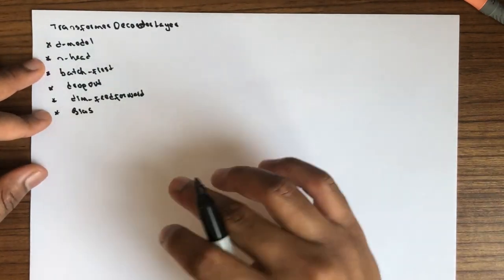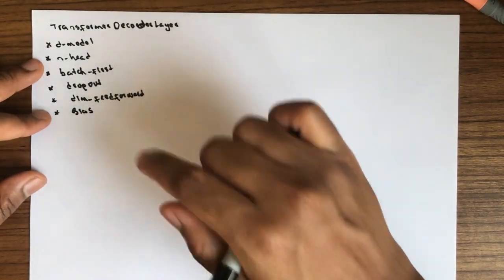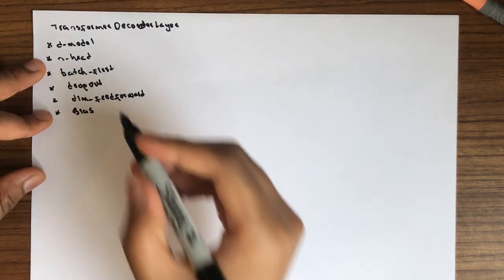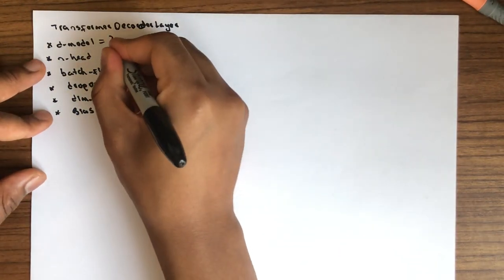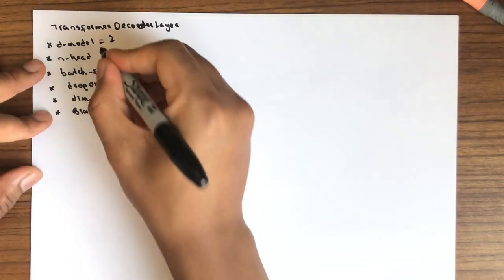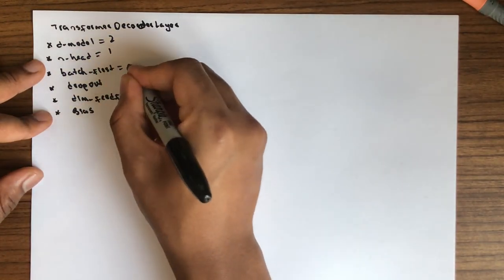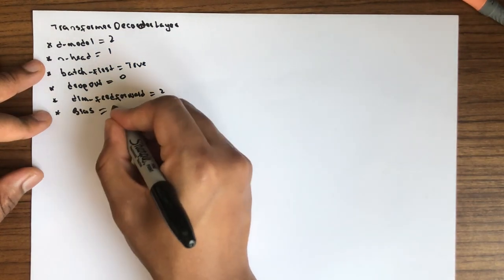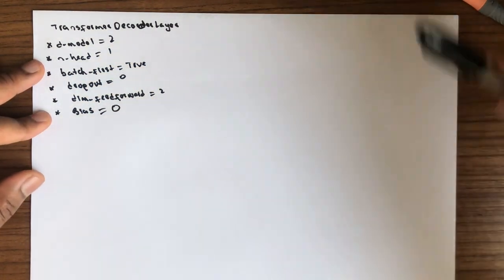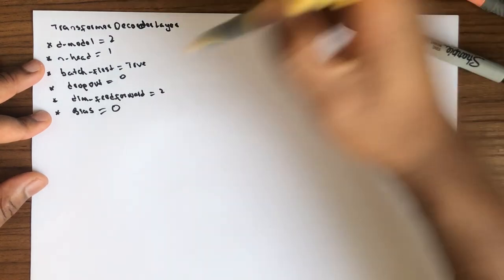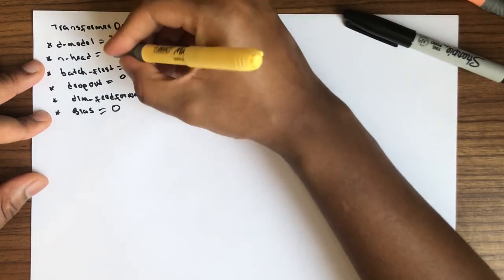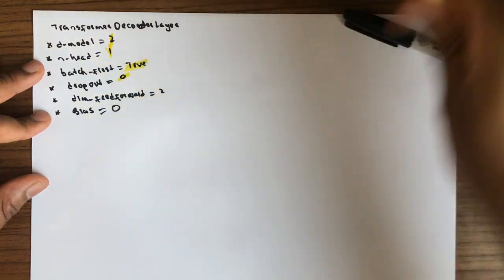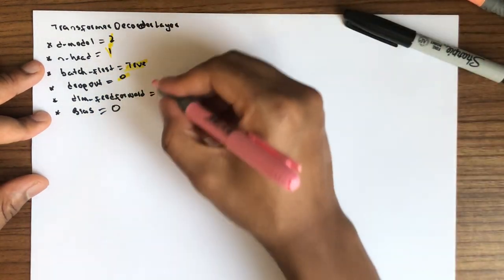So I'm going to put in the description the jupyter notebook related to this video. Okay, so this is going to be true for simplicity, this is one, this is true, this is zero and this is two. Okay, so the arguments, you can just highlight them to not make the writing look dull.